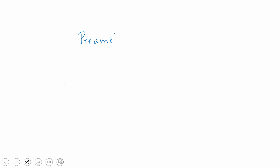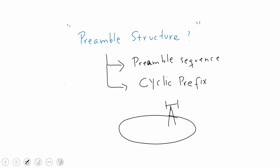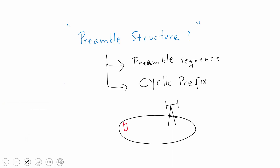The next question is: what does the preamble structure look like? It consists of two things: a preamble sequence - which we already talked about - and additionally a cyclic prefix. So a preamble structure consists of a preamble sequence and a cyclic prefix. The reason to add a cyclic prefix is so that when the random access attempt is sent to the eNodeB, it handles propagation effects based on cell size.